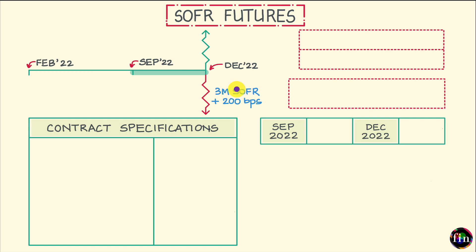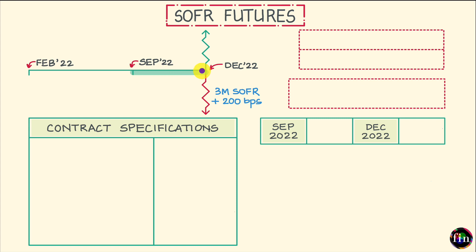The three-month SOFR is calculated from the SOFRs observed on each business day during this period by compounding all of these daily, or overnight, SOFRs. We will be observing the SOFRs on all business days starting from 21st September 2022 all the way till 20th December 2022.